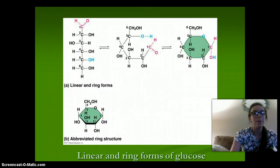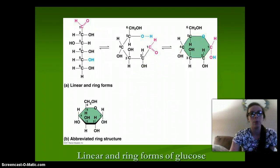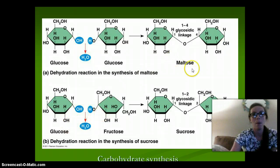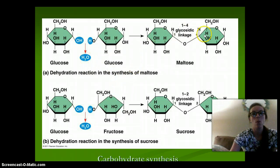There are linear forms or ringed forms of glucose. Here is the linear form, and the chains can fold and form rings. So these are linear and ringed forms of glucose, which is C6H12O6. Through dehydration synthesis, we can take glucose and form maltose — we have two glucose molecules, combine the OH on one side to the H on the other, release water, and link the two together to have maltose.